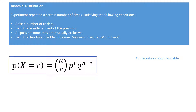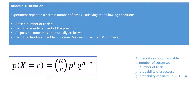Capital X is the discrete random variable. For instance, if we're flipping a coin we might define X as the number of tails obtained when flipping a coin three times, so X could be 0, 1, 2, or 3. r is the number of successes we're interested in — for example, if we want the probability of exactly two tails, r equals 2. n is the total number of trials, p is the probability of success, and q is the probability of failure, which equals 1 minus p.